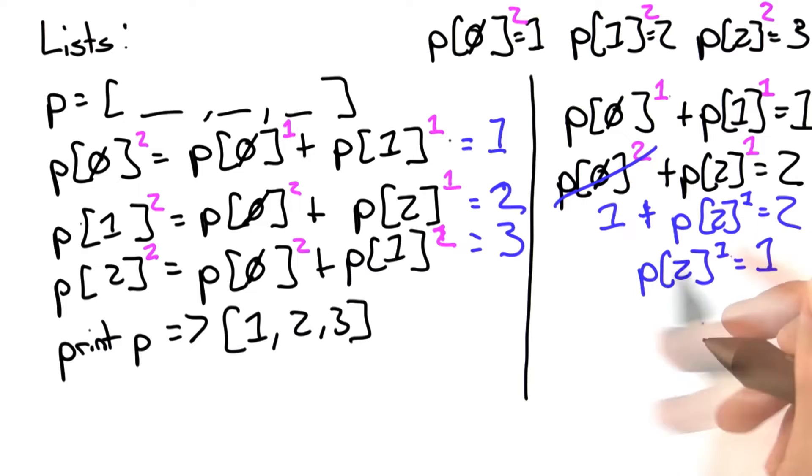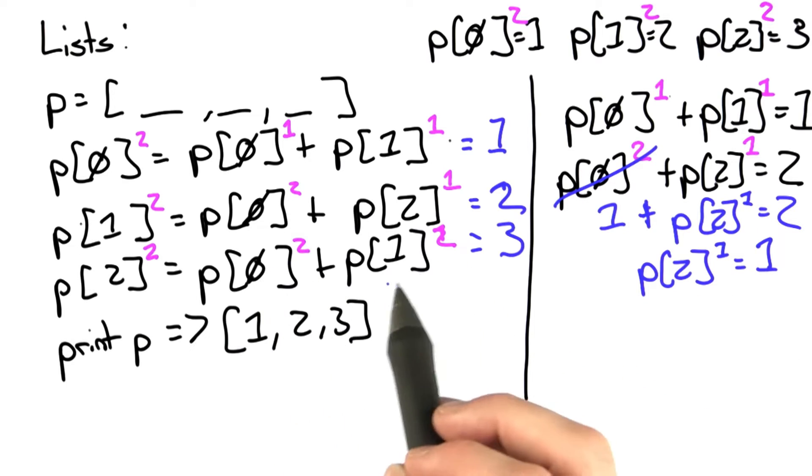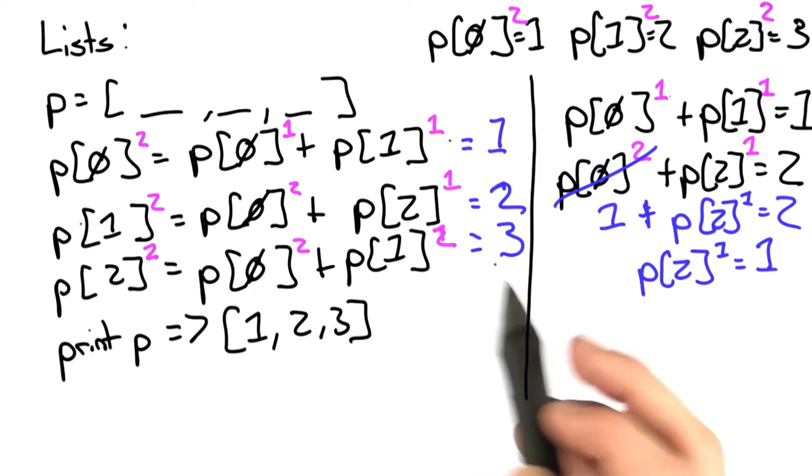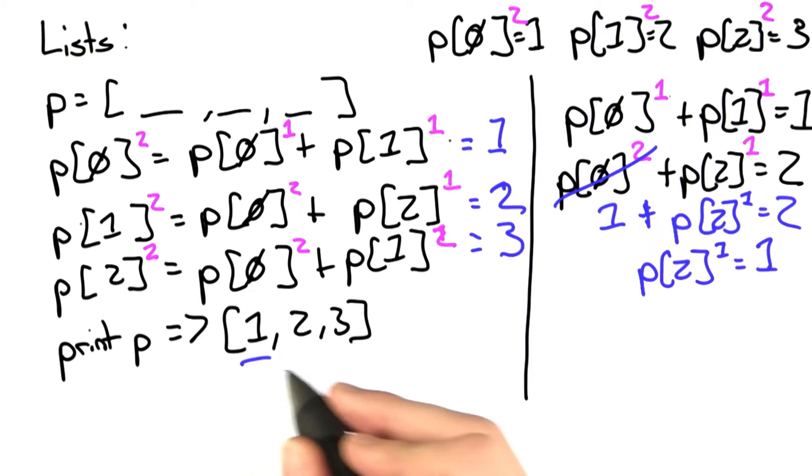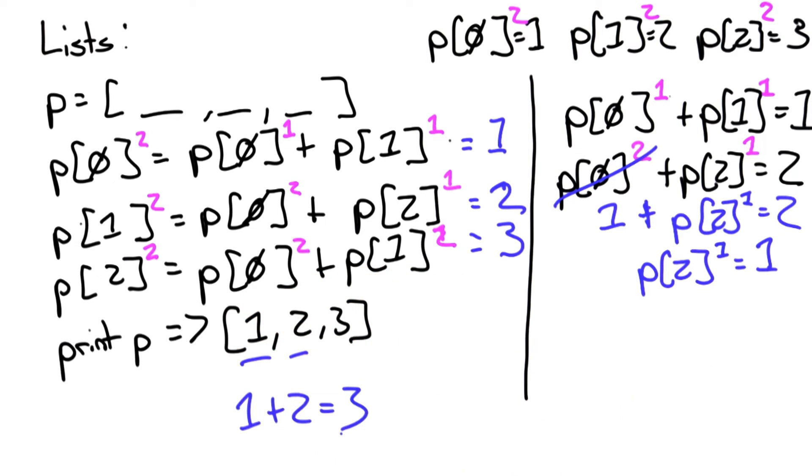In our last equation, we can just quickly glance at it and see that the final value of p[0] plus the final value of p[1] equals 3. Well, we're given that the final values are 1 and 2, so all we're saying is 1 plus 2 equals 3, which doesn't help us very much.